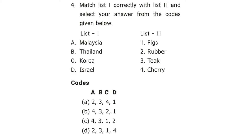The fourth question is: match List 1 correctly with List 2 and select your answers from the codes given below. List 1: Malaysia, Thailand, Korea, Israel. List 2: figs, rubber, teak, cherry. The correct answer is option A, 2-3-4-1.